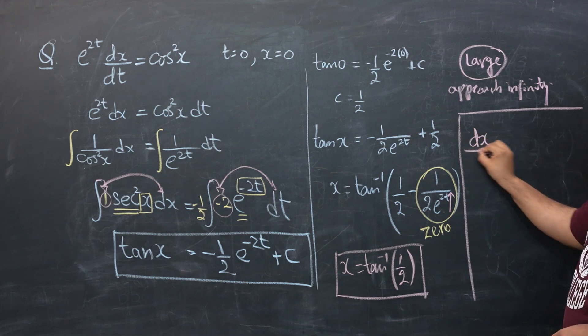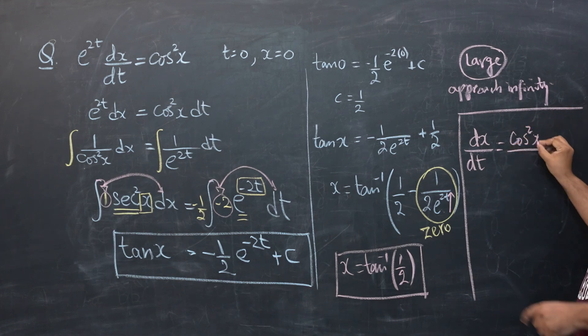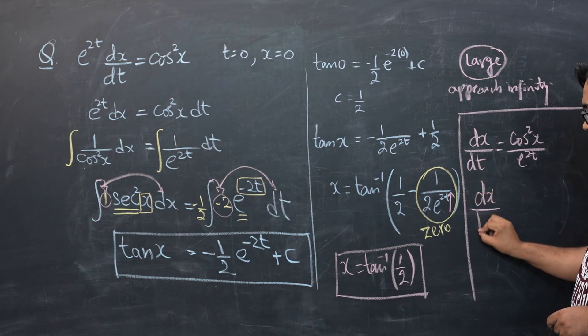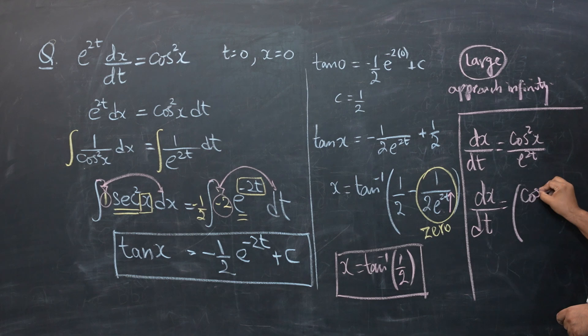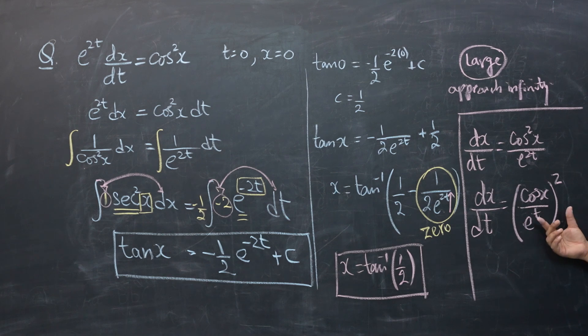So from the first equation, if I make x as subject, if I make dx/dt as subject, so that would become cos²x over e^(2t). I can show that dx/dt is basically cos x over e^t whole squared. That is because this square can be used as e^t whole squared and this square can be used as cos x whole squared.